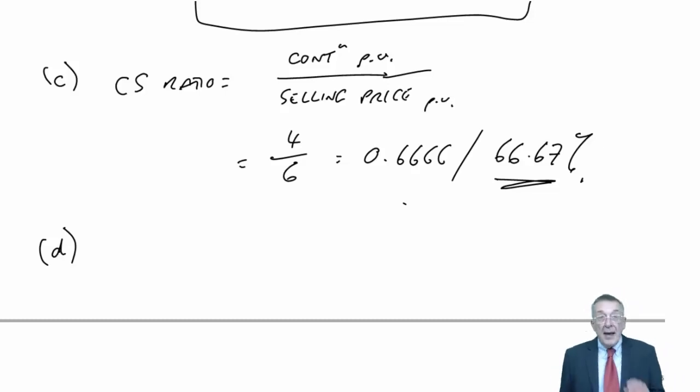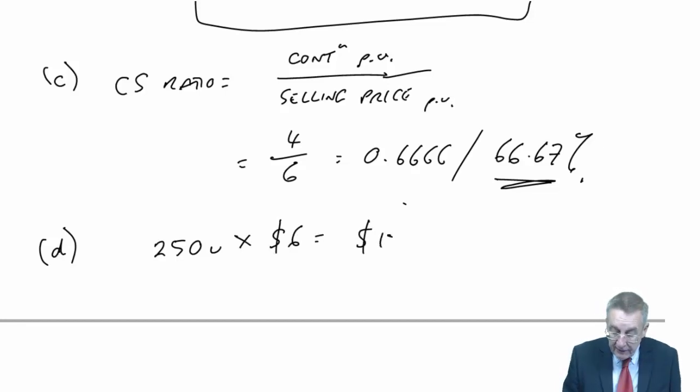Where the CS ratio can be particularly useful is in part D. We spoke about break-even in part B and we had it in units. To break-even for zero profit, we need to sell 250 units. Very often, instead of talking about break-even in units, we talk about it in revenue. How much revenue do we need to earn?